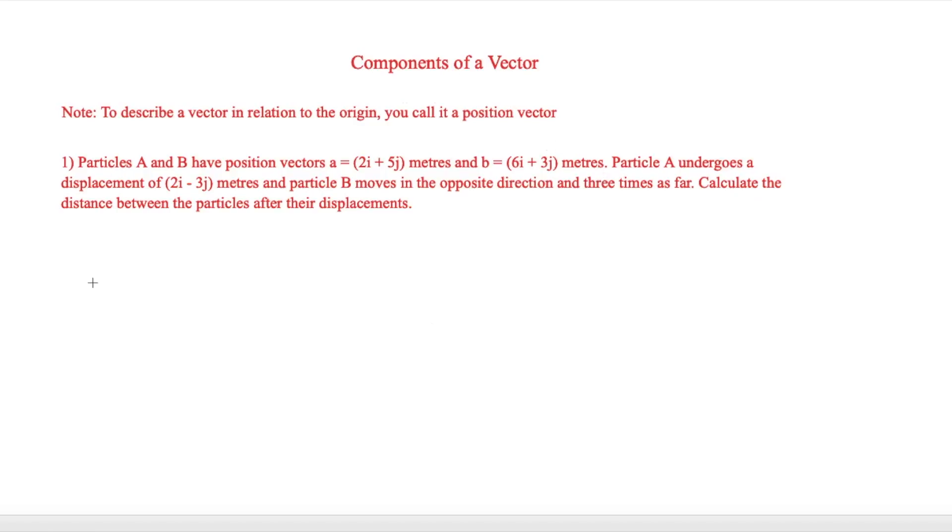So in order to do this, we've got to first work out what the position of a vector is after their displacements. So a is normally equal to 2i plus 5j. Now as this goes to a displacement of 2i minus 3j, we're simply going to add them together. And that will give us 4i plus 2j.